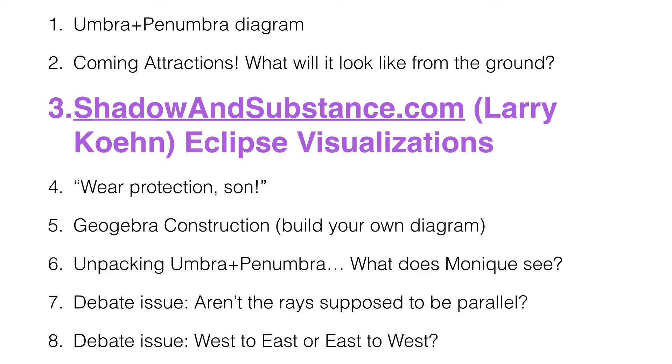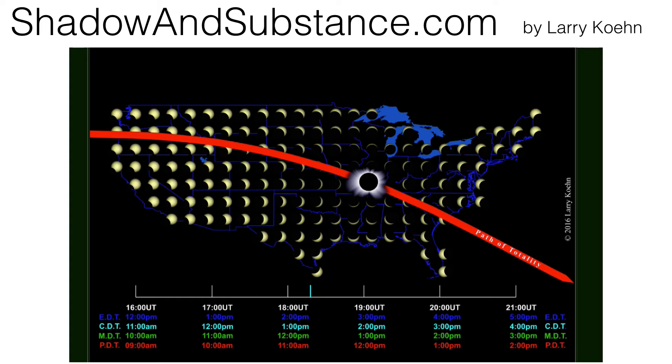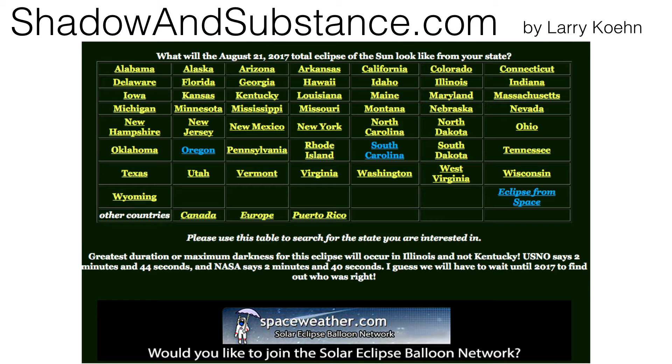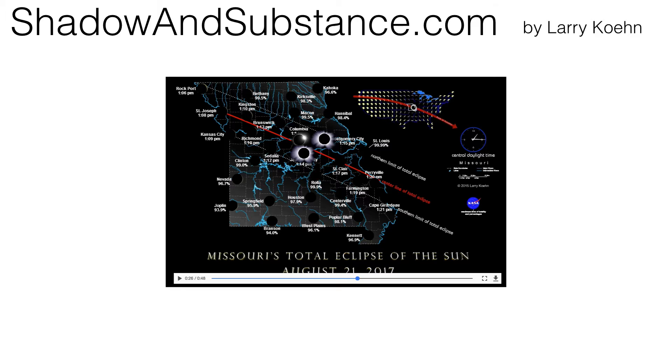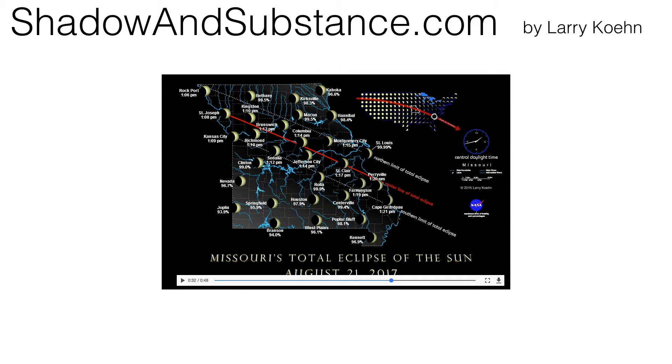Now we're going to take a look at much better visualizations at shadowandsubstance.com. He's got fantastic visualizations about what a viewer would see on the ground from the perspective of somebody standing and just looking and facing the sun. And he's done this for all 50 states, including some visualizations from space. So we're going to zoom in on the Missouri one. I just took a couple screen grabs of the animation as the eclipse passes through Missouri.